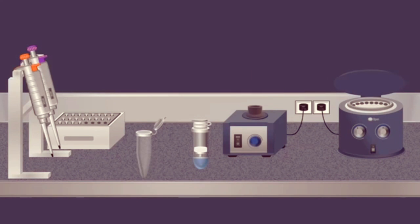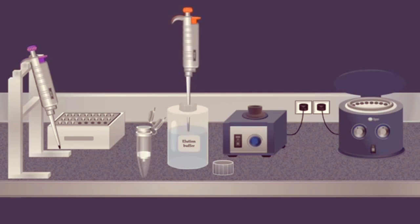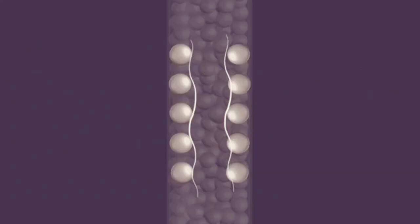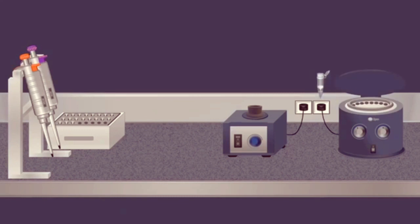Once the sample is washed, the column is placed in a clean microcentrifuge tube, and an elution buffer is added. Then, a centrifugation is carried out, forcing the elution buffer through the membrane. The elution buffer removes the viral RNA from the spin column, and a purified RNA, which is free of protein, inhibitors, and other contaminants is obtained.